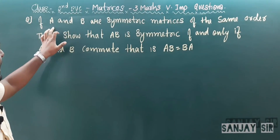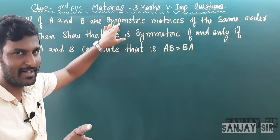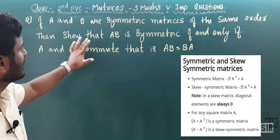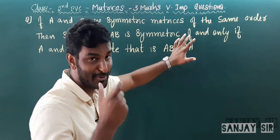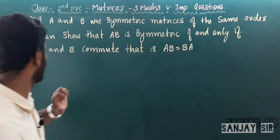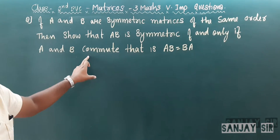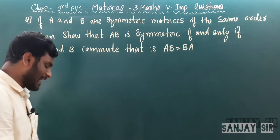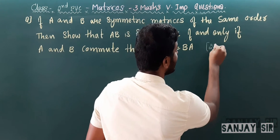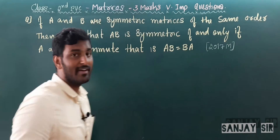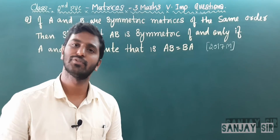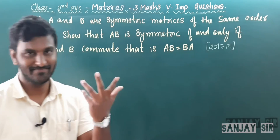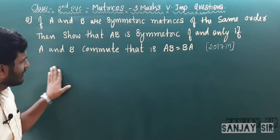The next question: if A and B are symmetric matrices of the same order, then show that AB is symmetric if and only if A and B commute, i.e., AB = BA. This question was asked in March 2017 — very important and very easy. They may repeat it in 2021 or 2022.